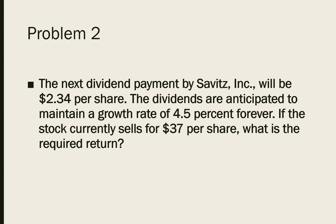So this first problem: the next dividend payment will be $2.34 per share. The dividends are anticipated to maintain a growth rate of 4.5% forever. If the stock currently sells for $37 per share, what's the required return? So first, what are we looking for? A required return. Growth is given in the problem — they tell us it's 4.5%.